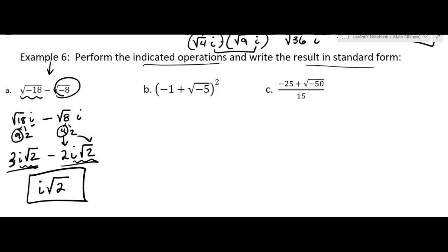Now let's look over here. I have a negative 1, and then I want to change this to be i square root 5. And then I'm going to square that.